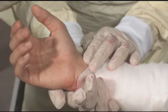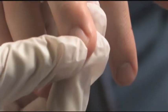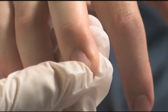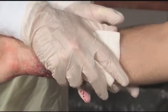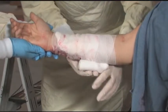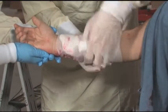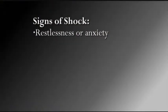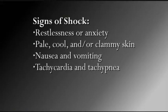Evaluation of circulation forms a critical part of your initial assessment. If blood is not adequately circulated, some of the cells and organs in the body will not receive an adequate supply of oxygen and dangerous waste products will begin to build up. If the problem is not corrected, shock will occur. Severe bleeding or hemorrhage is one of the most common causes of shock. Signs of shock include restlessness or anxiety, pale, cool, and/or clammy skin, nausea and vomiting, tachycardia and tachypnea, and as a very late sign, hypotension.